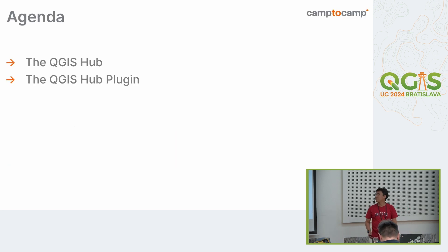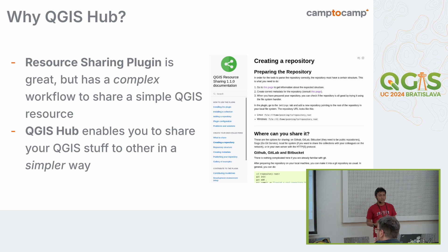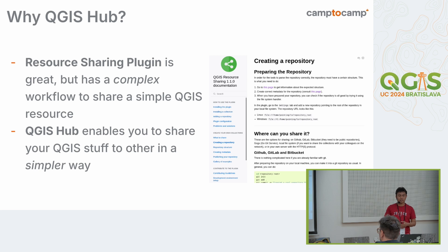On the agenda, I want to talk about QGIS Hub and the Hub plugin itself. So what is QGIS Hub? Basically, QGIS Hub is a way to share QGIS resources — it can be a style, a processing model, a 3D model, or even a layer definition. There is also another way to share resources called the Resource Sharing plugin, but we found that it's quite complex if you just want to share one or two styles you created, because you need to create a repository and follow a specific structure. QGIS Hub tries to offer a simpler way to share your QGIS resources.